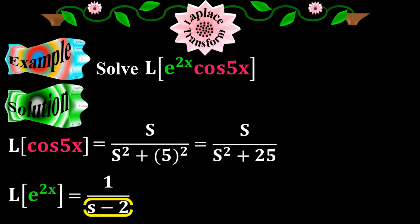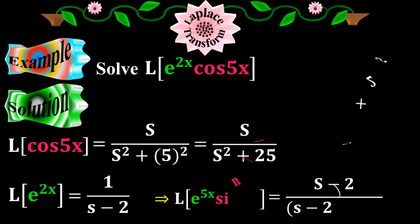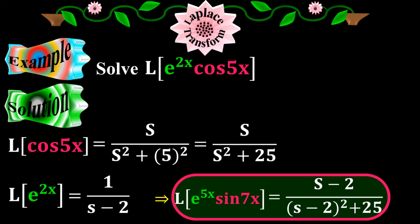Now I'm going to take s minus 2 and replace it for s squared as well as for s at the numerator. Just replace s squared and s by s minus 2 in the above function, which equals to s minus 2 over s minus 2 to the 2 plus 25. This is my final answer for the given function.